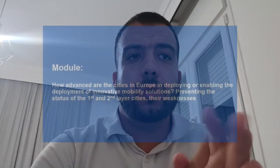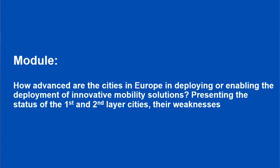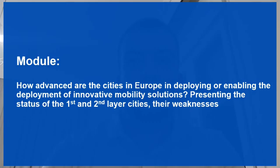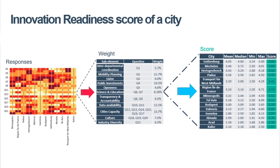The second part of the module will now present how advanced cities in Europe are in deploying or enabling the deployment of innovative mobility solutions, presenting the status of first and second layer cities by showing their weaknesses and strong points. Cities followed the same procedure mentioned before — they took the survey and then the score of each city was calculated. Gallenburg was found to be the most ready to adopt innovation, while Calis was the least ready.